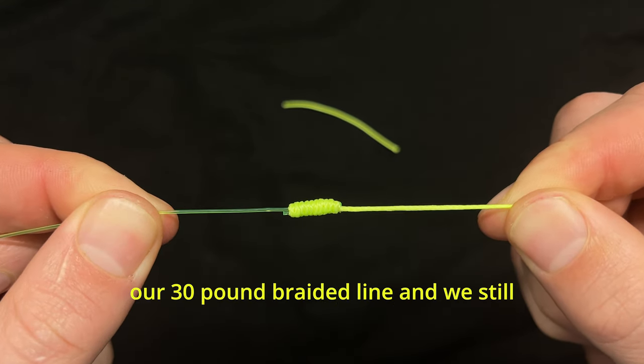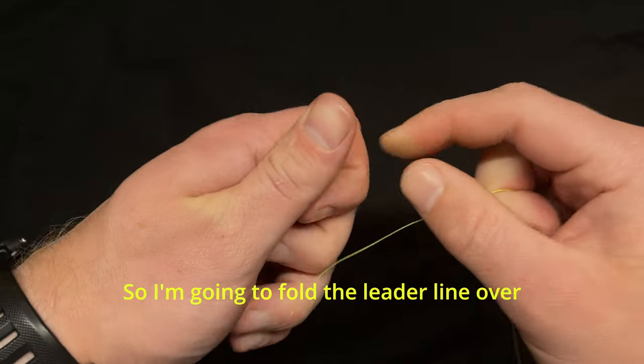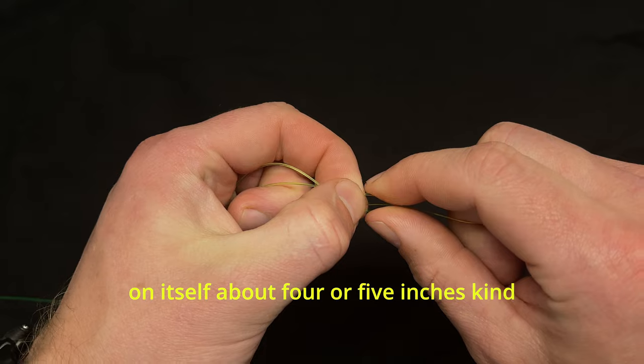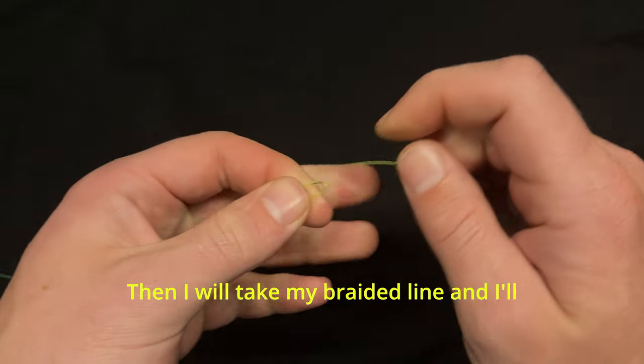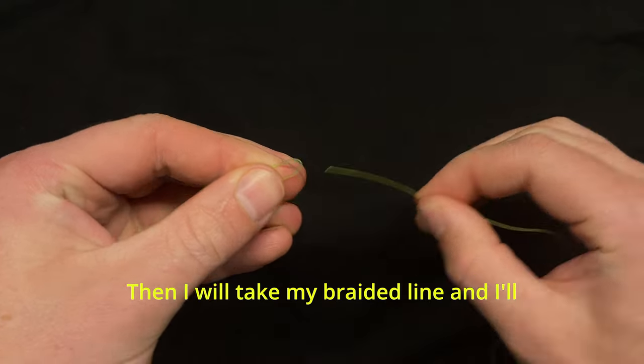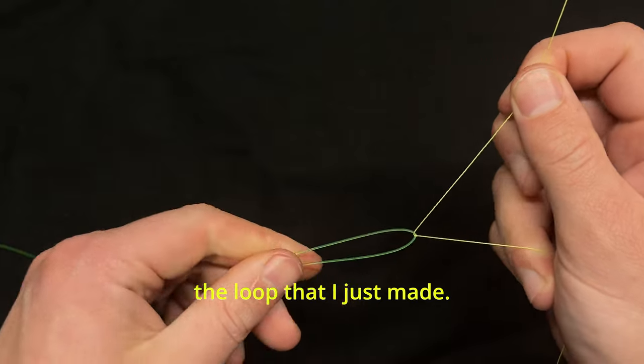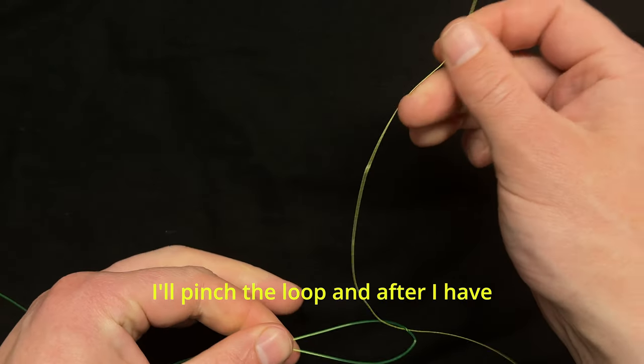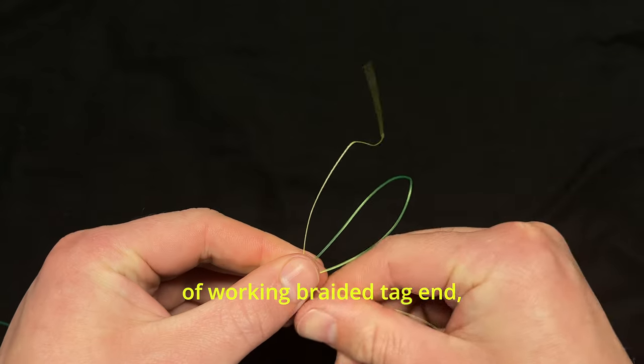Once more, this time we have our 30 pound braided line and we still have our 50 pound leader line. I'm going to fold the leader line over on itself about four or five inches, pinch where it folds, then take my braided line and run it up and through the loop that I just made. I'll pinch the loop and after I have about 10 or 12 inches or so of working braided tag end, I will pinch that as well right here.